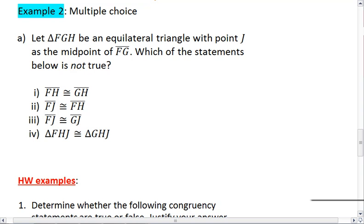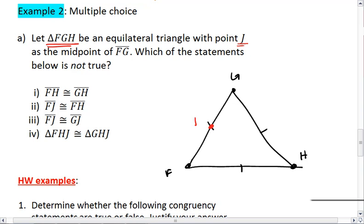Okay, I want to take this bit by bit. So I start with triangle FGH. I'm just going to draw a general triangle and label this FGH. I know that this is an equilateral triangle, so all three sides are congruent. And we have J as the midpoint of FG. So these two segments are congruent.